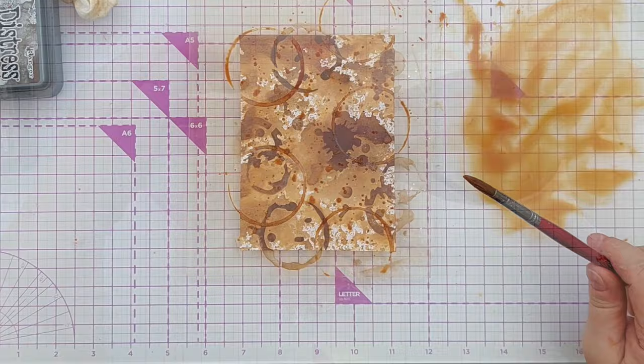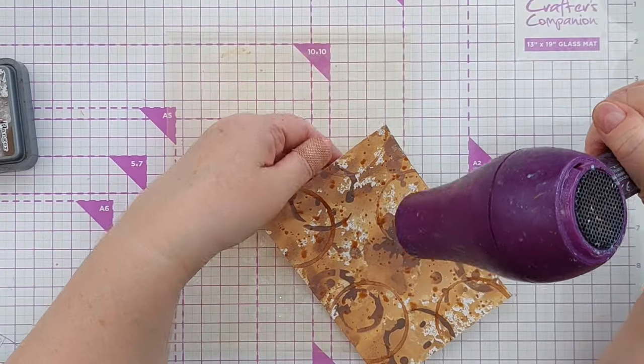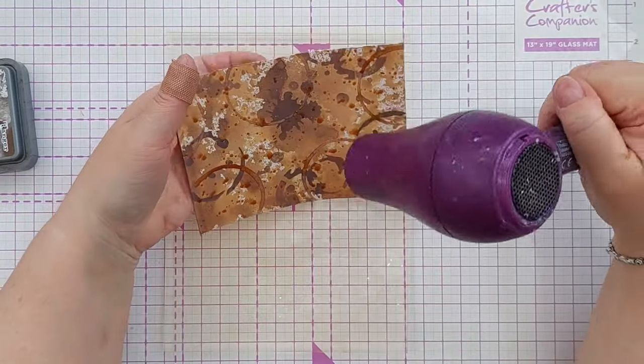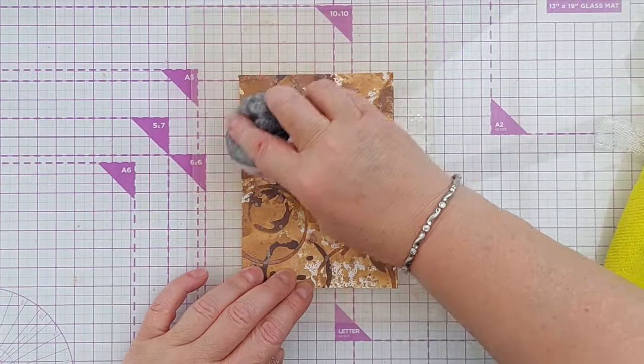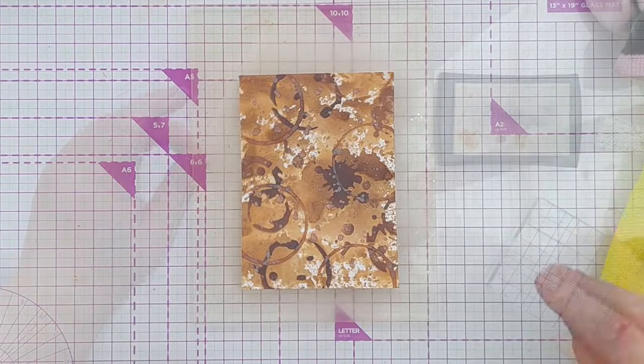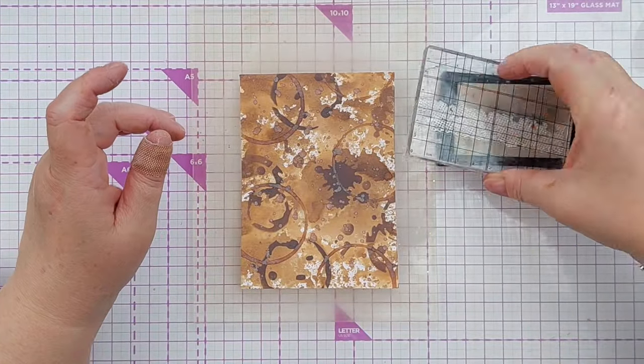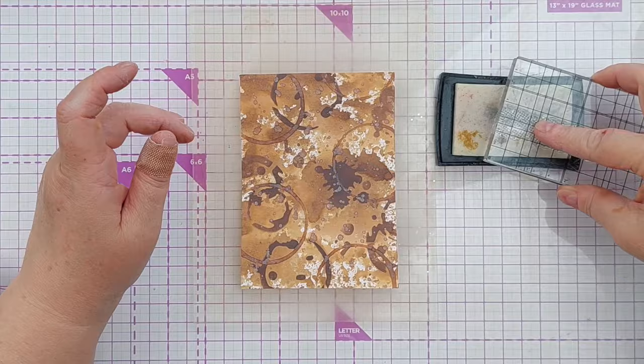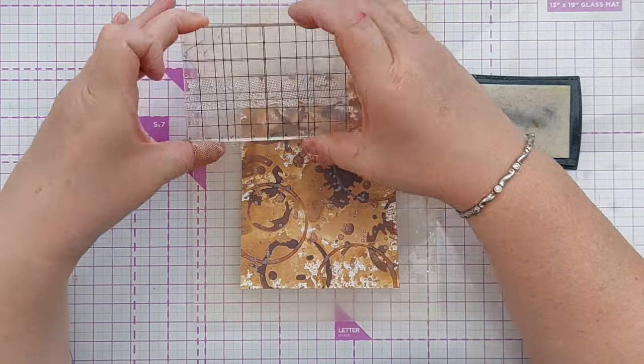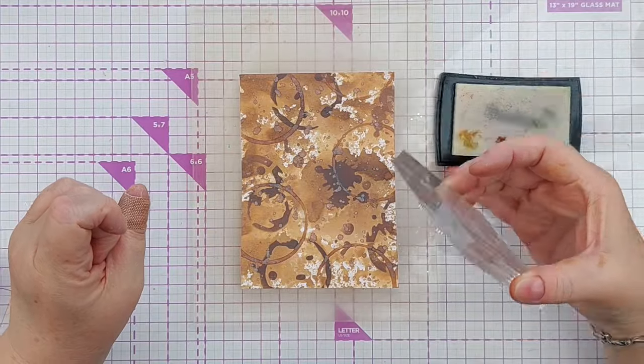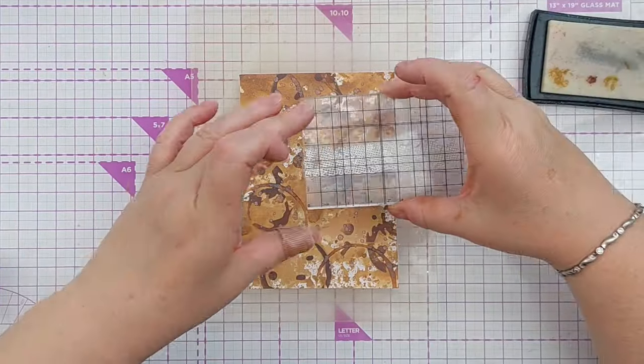Again, I dried that with my hairdryer and then I prepped it for heat embossing. So I went over the whole thing with some corn flour. You can use an anti-static powder tool for this or talcum powder. And this just makes sure that the ink is dry and there's no greasy fingerprints or static on the paper that would attract stray embossing powder.